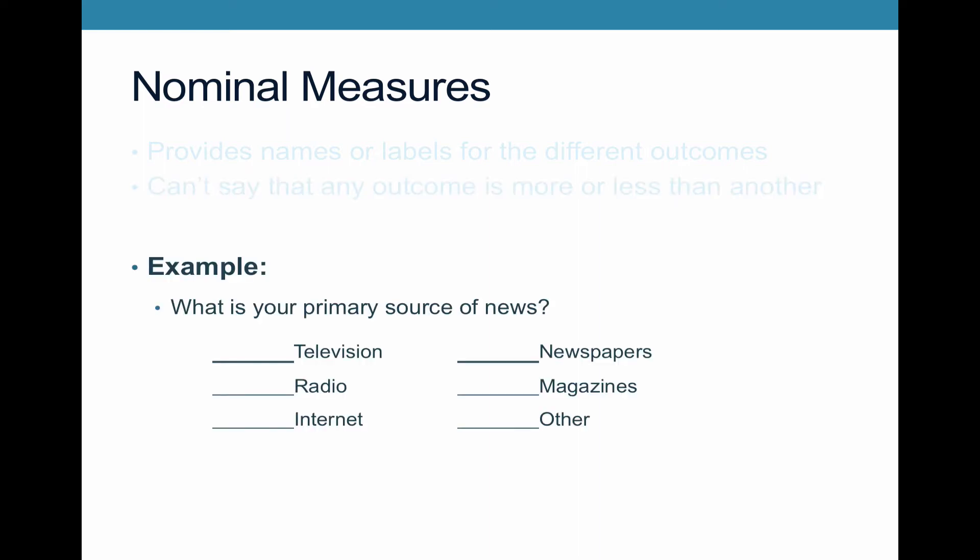Think about this with an example. If you had a question on a survey that said 'What is your primary source of news?' somebody says television, somebody else says radio, internet, newspapers, or other. You wouldn't order these in any particular way. You wouldn't say one is more than another — they're simply different.